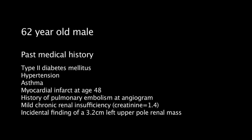The patient is a 62-year-old male whose past medical history includes type 2 diabetes, hypertension, asthma, a myocardial infarction 14 years prior to the procedure, a history of a pulmonary embolism at the time of having an angiogram, mild chronic renal insufficiency with a creatinine of 1.4, and the incidental finding of a 3.2-centimeter left upper pole mass.